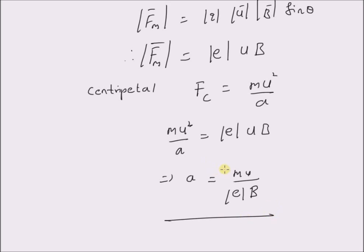This is the final result. The radius of the circle in which the particle moves is given by the mass times the magnitude of the velocity, divided by the charge times the magnitude of the magnetic field.